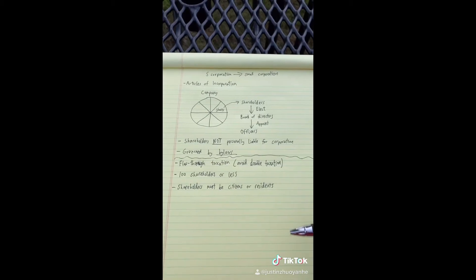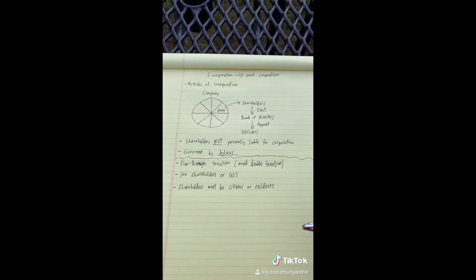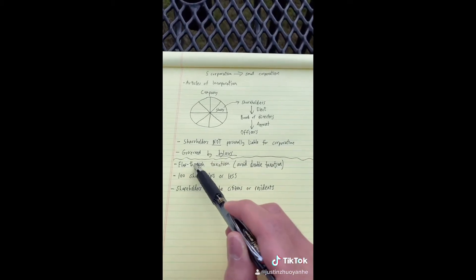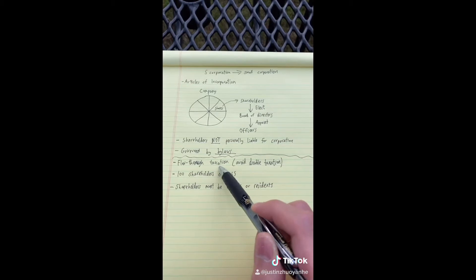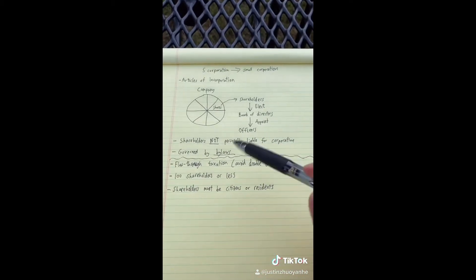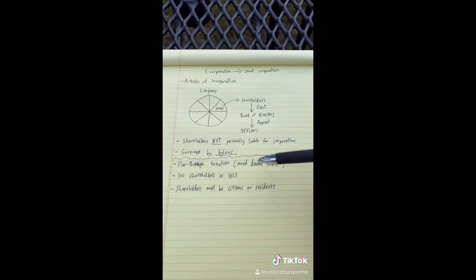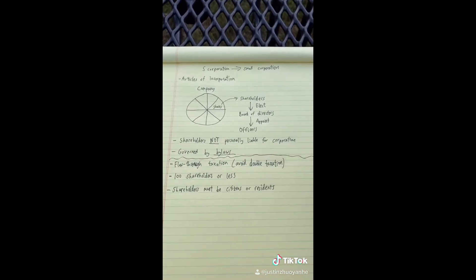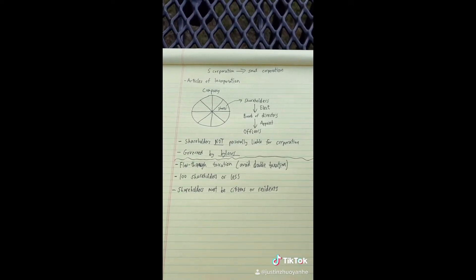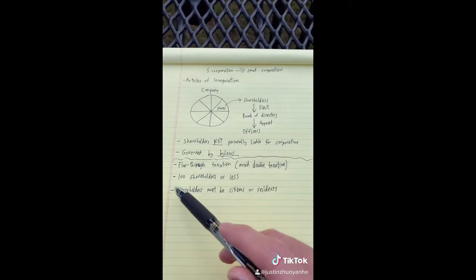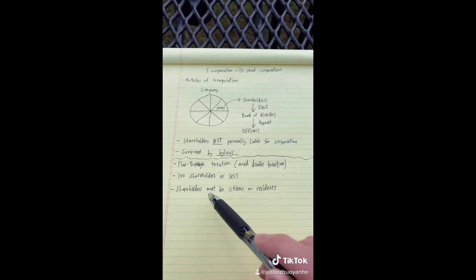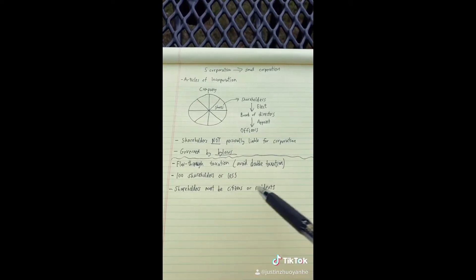The added attributes of S corporations include flow-through taxation, which means you can avoid double taxation by being taxed directly through the shareholders instead of being charged a corporate tax. It is also required to have 100 shareholders or less, and the shareholders must be U.S. citizens or residents.